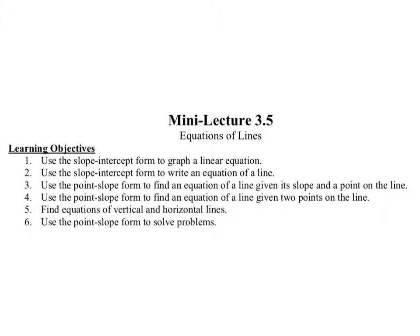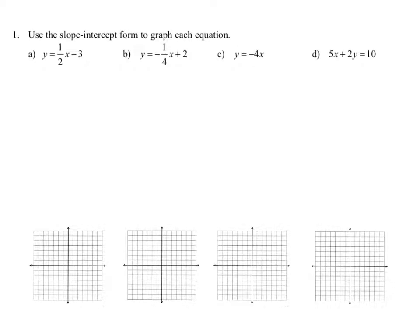In Chapter 3, Section 5, we are looking at equations of lines. Our objectives are to use the slope-intercept form to graph a linear equation, use the slope-intercept form to write an equation of a line, use the point-slope form to find an equation of a line given its slope and a point on the line, to find an equation of a line given two points on the line, find equations of vertical and horizontal lines, and use the point-slope form to solve problems.